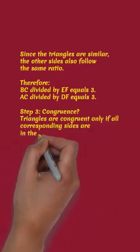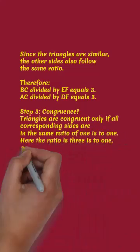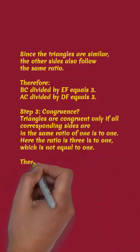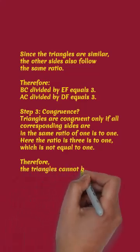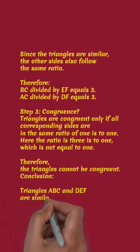Step 3: Congruence. Triangles are congruent only if all corresponding sides are in the same ratio of 1 to 1. Here, the ratio is 3 to 1, which is not equal to 1.